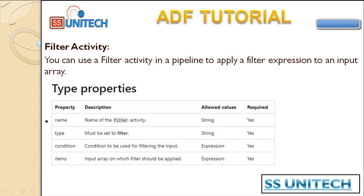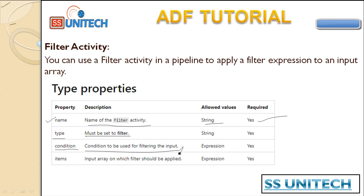Now let's look at the properties of the filter activity. The first property is the name — the name of the filter activity, which is a string and is required. The second is the type, which must be 'Filter'. Next is the condition, which is very important — here we write the expression to filter the input array. Finally, the item property indicates the input array from where we get the file names. That will be the output of the get metadata activity, and under the condition we'll filter for employee first, then payroll.